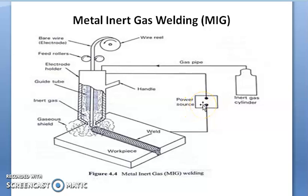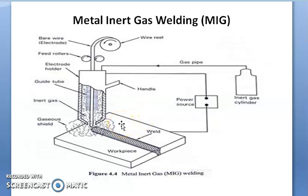In MIG welding we use AC or DC power supply, but AC is rarely used. Instead, DC is used and the electrode is positively charged, which results in faster melting of the electrode. In operation, the workpieces to be joined are cleaned to remove dust particles either chemically or mechanically. The tip of the electrode is also cleaned with a wire brush.